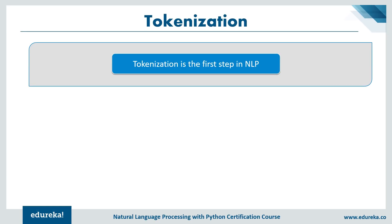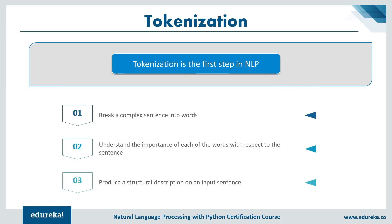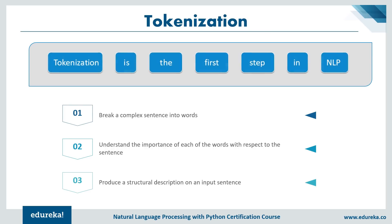When processing text, the first key terminology to understand is tokenization. Tokenization is the process of breaking strings into tokens, which are small structures or units. It involves three steps: breaking a complex sentence into words, understanding the importance of each word with respect to the sentence, and producing a structural description of the input sentence. For example, the sentence 'Tokenization is the first step in NLP' is divided into seven tokens.